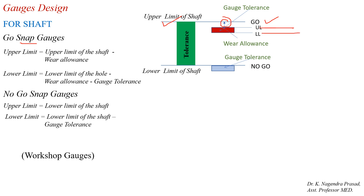The go snap gauge has two limits — upper limit and lower limit. The upper limit of the go snap gauge equals the upper limit of the shaft minus the wear allowance. The lower limit of the go snap gauge equals the upper limit of the shaft minus the wear allowance minus the gauge tolerance. For the no-go snap gauges, the upper limit equals the lower limit of the shaft, and the lower limit of the no-go snap gauge equals the lower limit of the shaft minus the gauge tolerance. This is the schematic representation for the shop gauges.